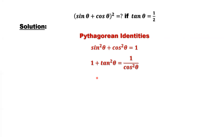Now how to pick those identities to use based on the given information. What is given? Tangent theta. What do we want to find? We want to find sine theta, or cosine theta, or both. So from the given condition, is there any identity to link those sine, cosine, and tangent?